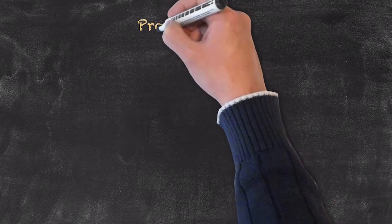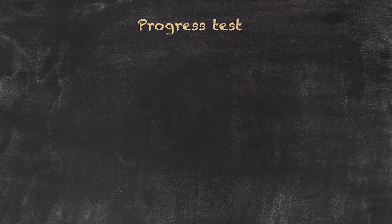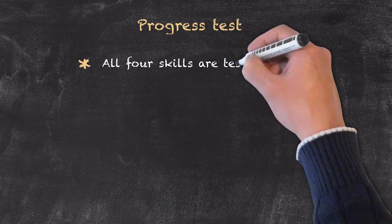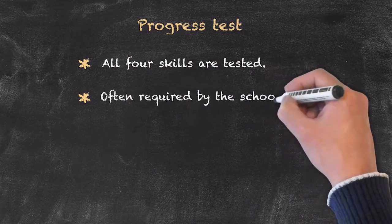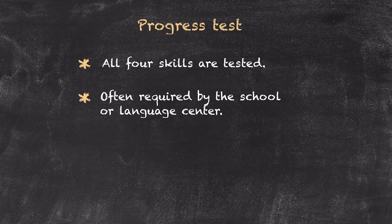The next type of test is called the progress test, and it's one that whatever teaching situation you find yourself in, you're probably going to be involved in one way or another. Typically for progress tests, all four skills are tested. This type of test is often required by the school or the language centre that you're working in, and even so by the parents to show that learning has taken place.